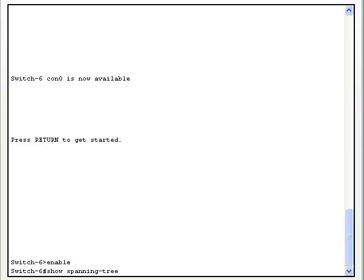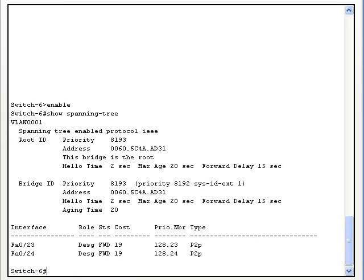Now, let's look at the terminal window of switch 6 to see if it is the root bridge. Under the root ID, it says this bridge is the root. Also, notice that all the ports are designated ports. Switch 6 is the root bridge.